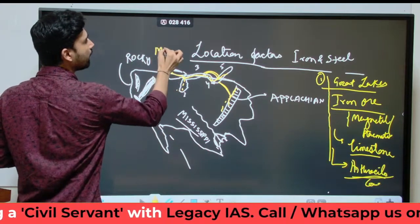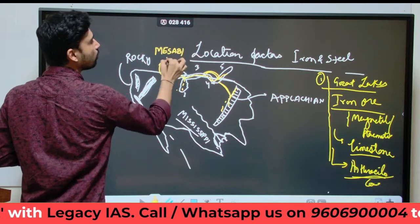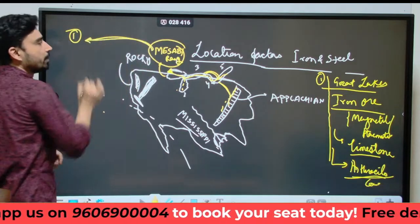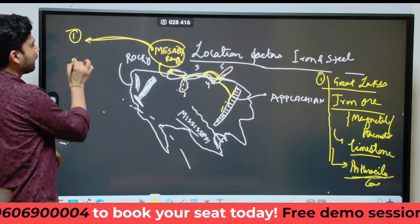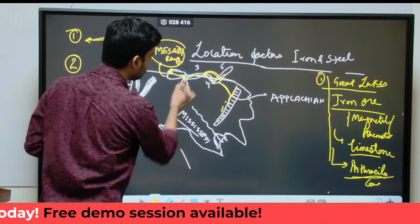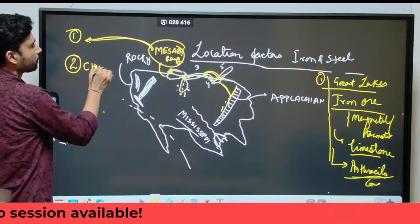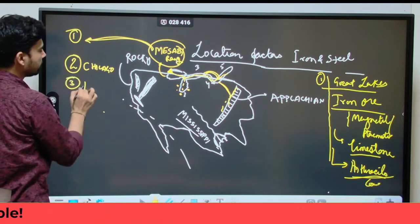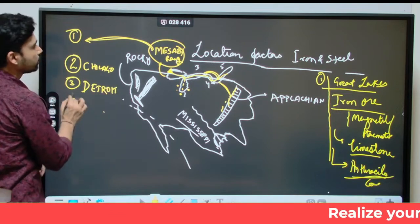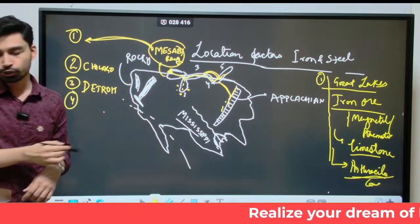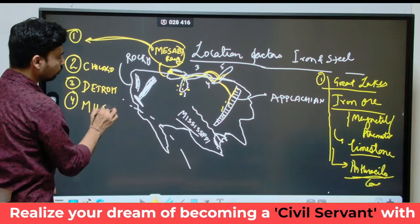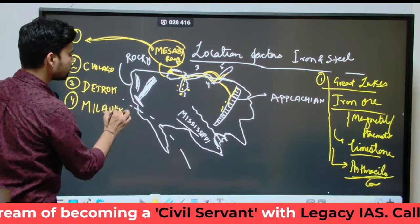Near Lake Superior, we have a region called the Mesabi Range, where the iron and steel industry is very well developed. Further along the lakes, we have the city of Chicago. The third city is Detroit, also known as the automobile capital of the USA. Further to the south, we have another city known for super-specialized industry - Milwaukee.